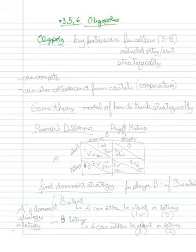So for an oligopoly, the key features are that there are few sellers, generally anywhere from 5 to 8. Another feature is that there is restricted entry and exit. And decisions are made strategically, both decisions on price and decisions on quantity.